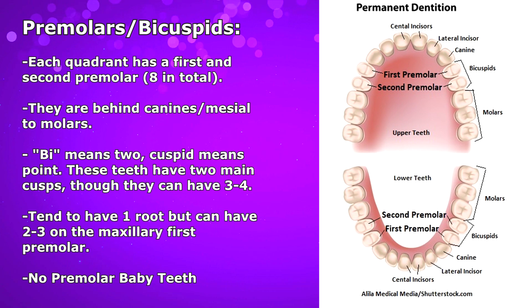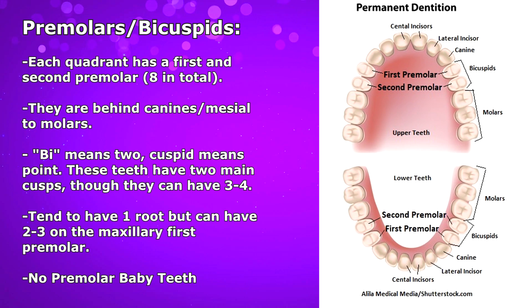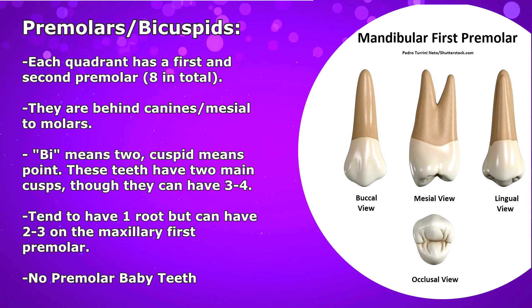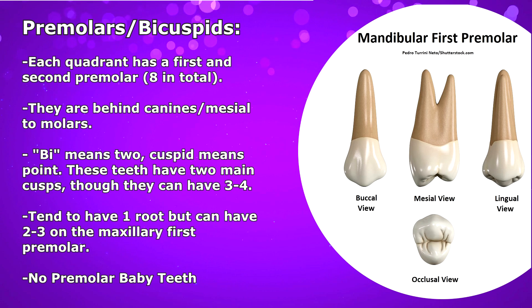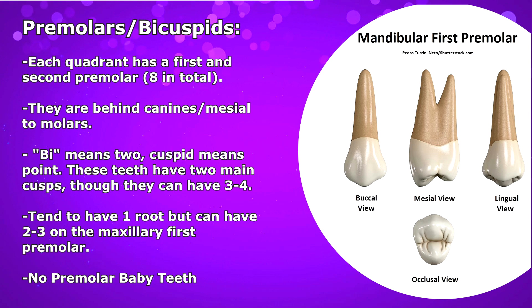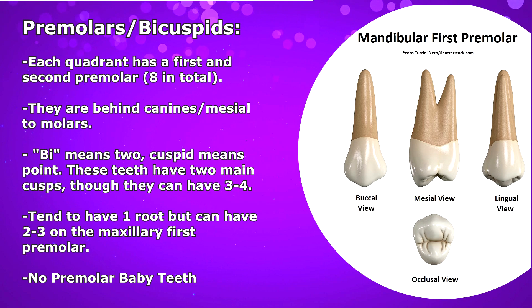And it's easy to remember the location of these teeth because the name premolar pretty much tells you that they are before or mesial to the molars. Also the prefix bi means two, and again cuspid means point. So the name itself tells you that the crown of these teeth generally have two main points or cusps, though they can also have an extra one or two cusps, especially on the mandibular second premolar.